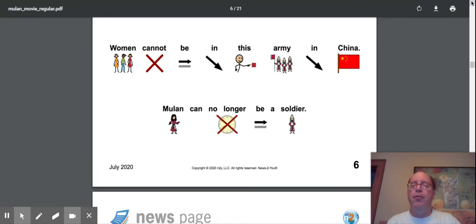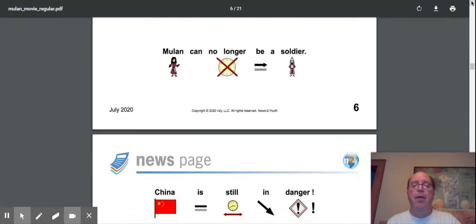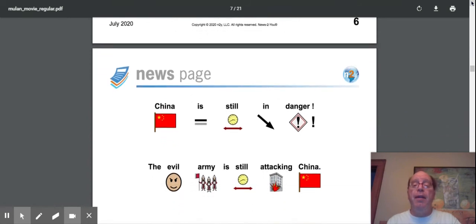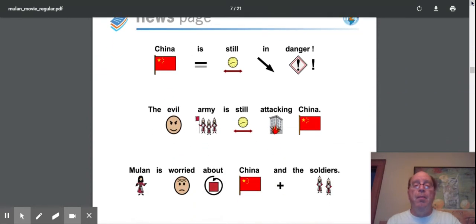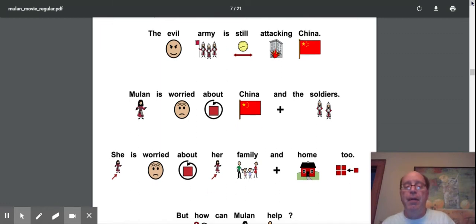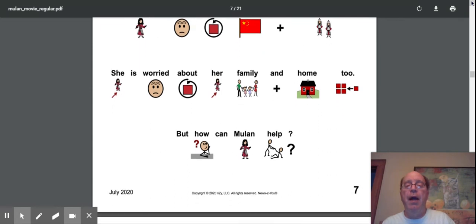Mulan can no longer be a soldier. China is still in danger. The evil army is still attacking China. Mulan is worried about China and the soldiers. She's worried about her family and her home, too. She doesn't want the evil army to come in and attack her family. But how can Mulan help?